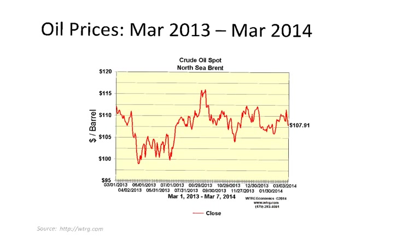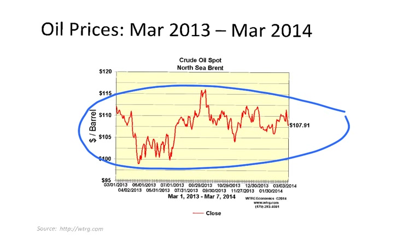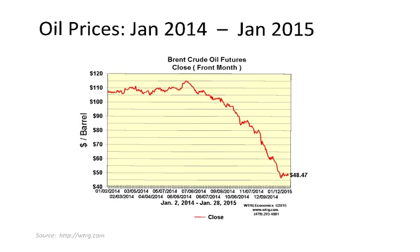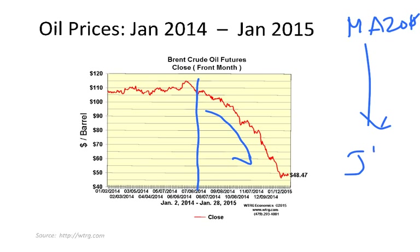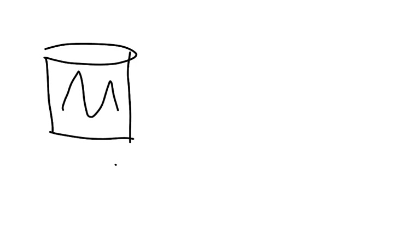Looking at the period 2013–2014, oil was around $100 per barrel. However, after the summer of 2014, the price of oil started to go down to $40–$50 per barrel. At the time of recording this video in March 2015, the price was $54. So we can see that the oil price changes significantly up and down.